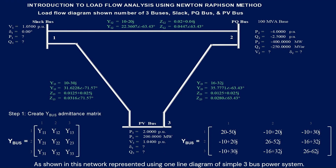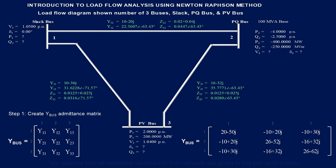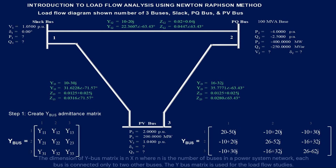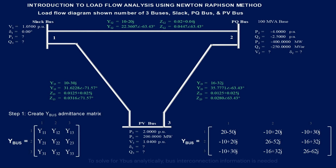As shown in this network, represented using a one-line diagram of a simple three-bus power system, we assume that all electrical variables in this network are given in the per-unit system. Step 1: How do you find the Y-bus matrix? The dimension of the Y-bus matrix is N×N, where N is the number of buses in the power system network. The Y-bus matrix is used for the load flow studies. Y-bus is referred to as the admittance matrix — a mathematical representation of the network power flow model. To solve for Y-bus analytically, bus interconnection information is needed.